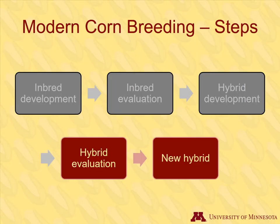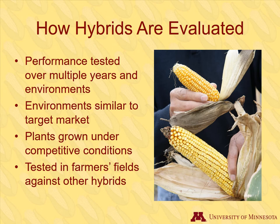Now the hybrids have to be evaluated. It is important that hybrids' performance be tested over multiple years in multiple environments. This demonstrates whether a hybrid has stability and adaptability, or in other words, a more predictable outcome when the farmer grows the hybrid. Environments where the hybrids will be tested are similar to the target market. Upper Midwest hybrids will be tested under different conditions than hybrids marketed for the South. Plants are grown under competitive conditions, such as a higher than normal planting density, in order to weed out poor performers.